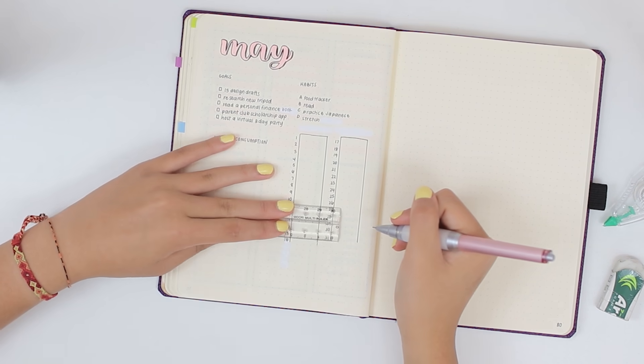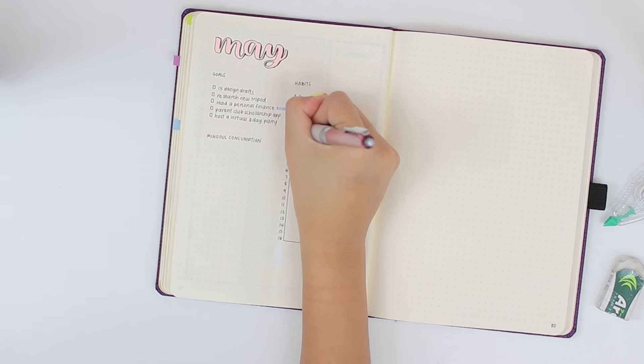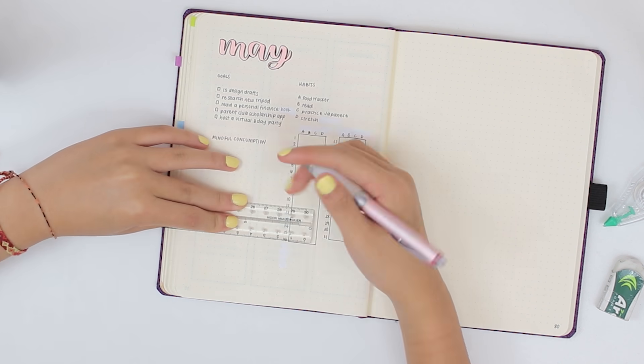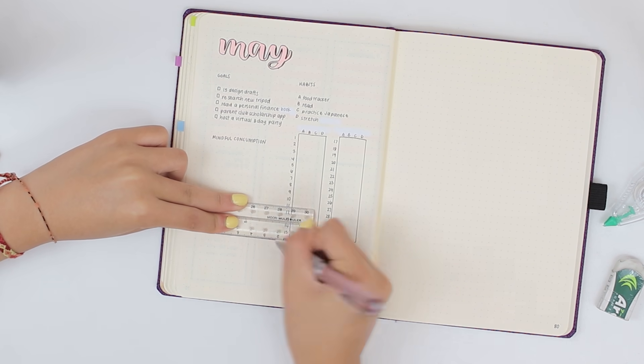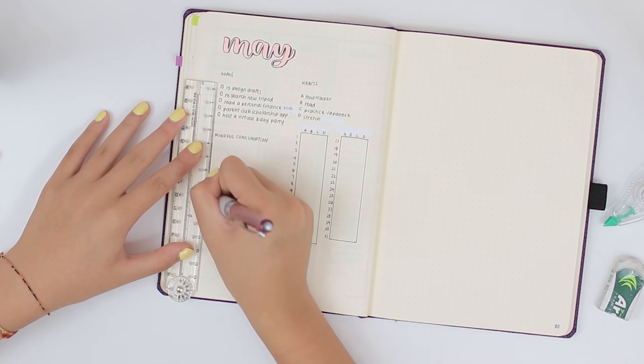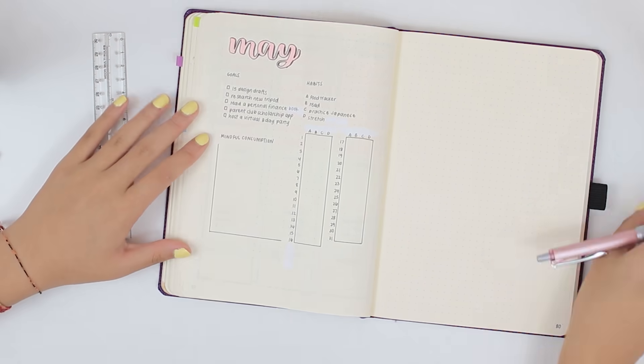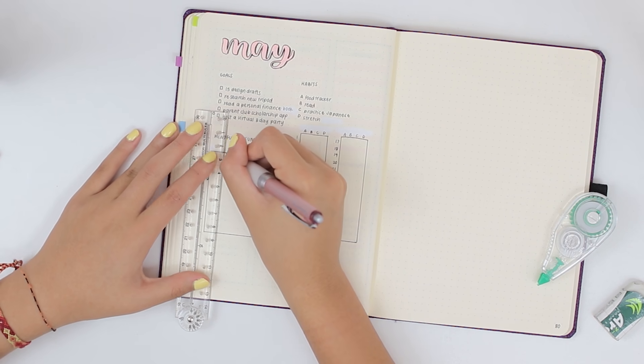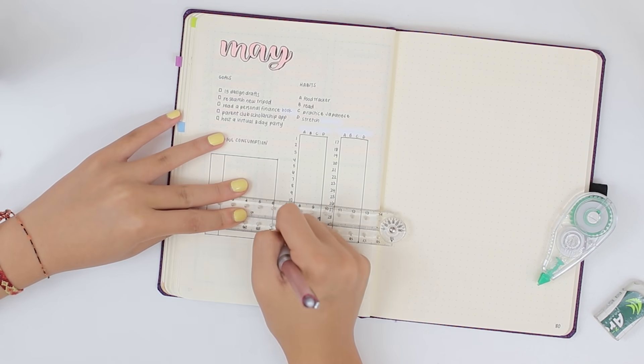Overall though, I kept my May spread very minimal. This was pretty much everything. The only other thing I'm adding is my mindful consumption tracker, which is where I list out basically every item I've had an impulse to buy during this month. And then each month I get to choose one item that's not essential. I made some rules for myself as to what is actually essential on some earlier pages.